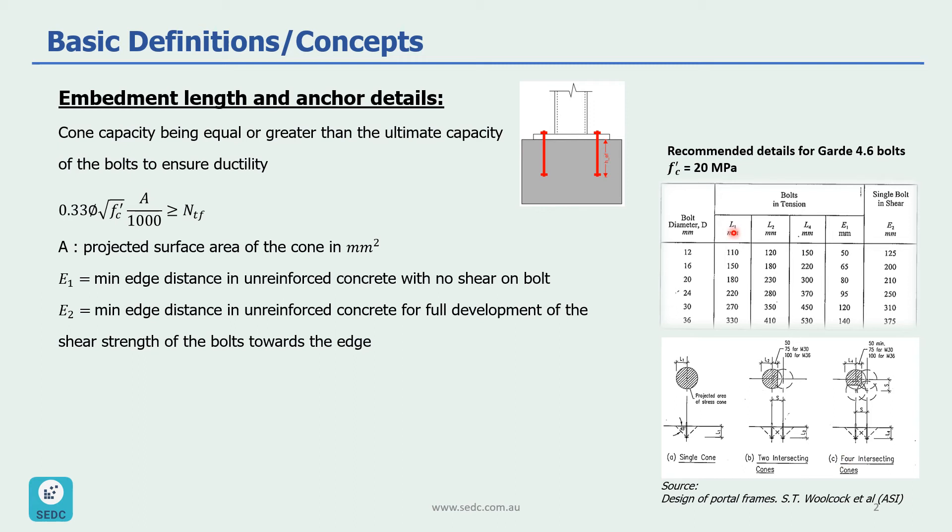So you can see these values L1, L2 and L4 for different bolt diameters. Also in this table you can see minimum edge distances which are shown by E1 and E2. E1 is minimum edge distance in unreinforced concrete with no shear on bolts. E2 is minimum edge distance in unreinforced concrete for full development of shear strength of the bolts towards the edge.